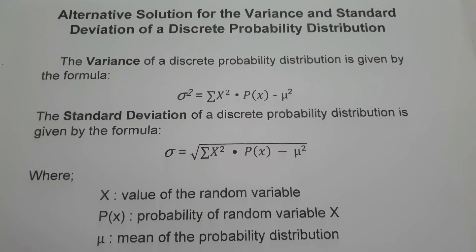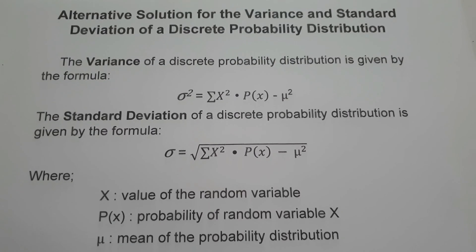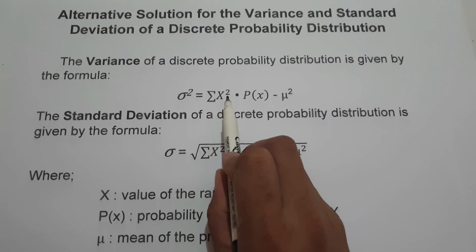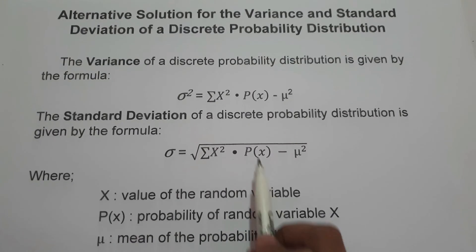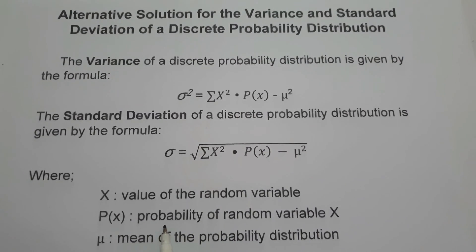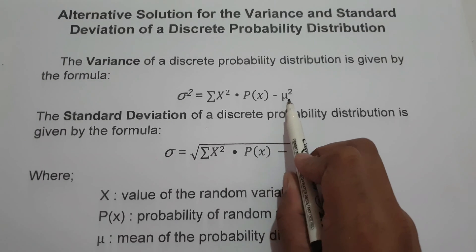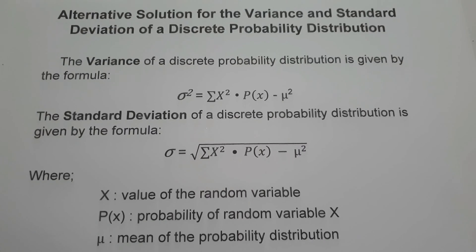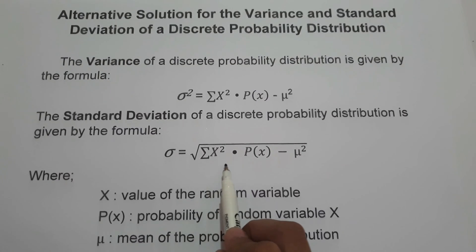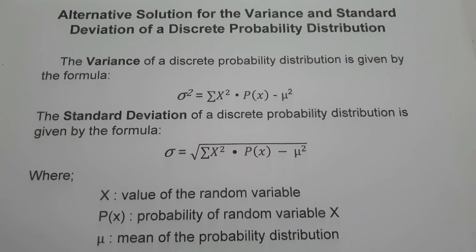In this video, I'm going to show you the alternate solution on how to compute for the variance and standard deviation of a discrete probability distribution. The variance is denoted by the formula: summation of x squared times p(x), where x is the value of the random variable multiplied by p(x), minus the mean squared. The standard deviation is given by the square root of the summation of x squared times p(x) minus the mean squared.